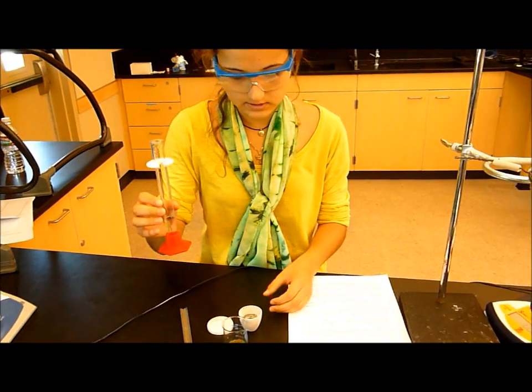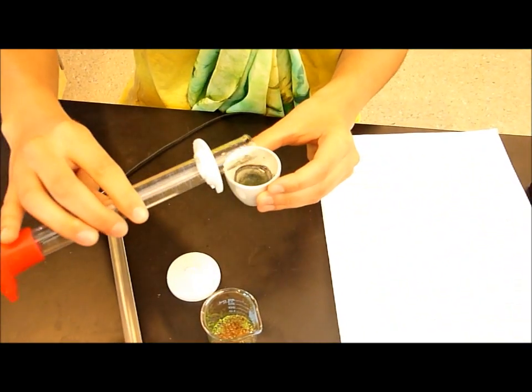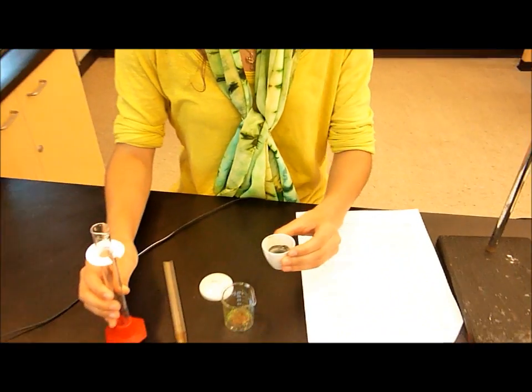Then, rinse out the crucible with eight milliliters of distilled water, and pour the water into the 50 milliliter beaker.